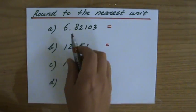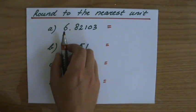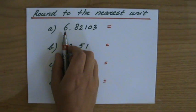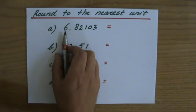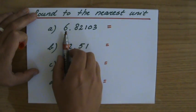To the nearest unit, so I go to the correct place value. My unit is in this case a six and it either stays a six or it goes up to a seven. When I'm rounding, that always depends on the next number which in this case is my first decimal.